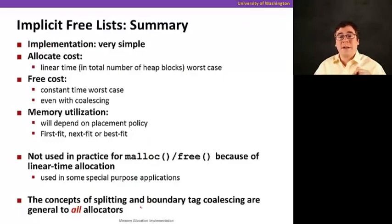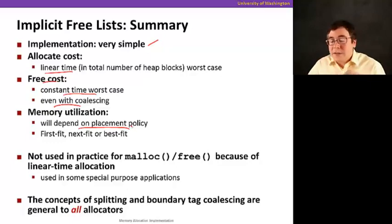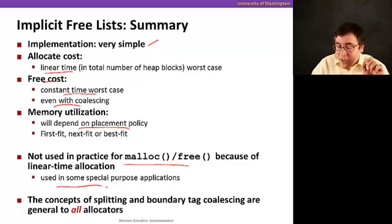So, here's a summary of implicit free lists. The implementation is very simple. The allocate cost is linear time on the total number of heap blocks, including allocated and free. So, the free cost is constant time. In the worst case, even with coalescing, because I'm going to know how to point both forwards and backwards, so we never have to scan the heap. And so, the memory utilization that we get is going to depend on the placement policy, whether it's first fit or best fit or next fit. And so, this is not used in practice for malloc and free because of this linear time allocation. That's still not good. We can do a lot better. We're going to see that. But it is used in some special purpose applications. So, everybody keep in mind that the concept of splitting and boundary tags are general to all allocators. We're going to use this concept of splitting, splitting free blocks, right? So, we don't, you don't waste the part that was still free in your block, in case you use a block that's larger than what you need. And we're going to use things like boundary tag to make coalescing fast. See you soon.